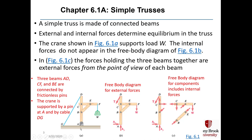The crane is made of three beams: AD, CF, and BE. They're connected by frictionless pins at points B, C, and E, and the crane is supported by a pin at point A and by cable DG. The pin at point A cannot withstand the moment of weight W making the whole crane want to rotate clockwise. Only the cable connected between points D and G can do that. The tension in the cable creates a counterclockwise moment around point A, which balances the moment caused by weight W rotating clockwise.